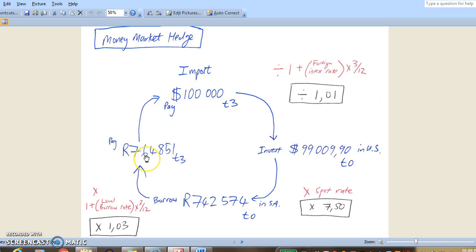well then we will owe on payment date R764,851. So we will have to pay the bank in South Africa R764,000 in 3 months time. So effectively what will happen? We import the goods today, we don't pay the creditor yet. In 3 months time we are going to pay them $100,000 US dollars.